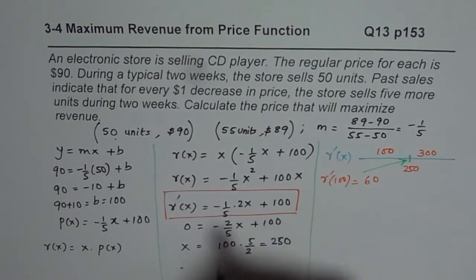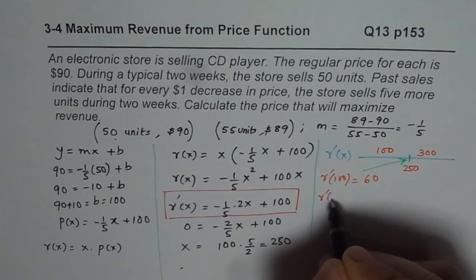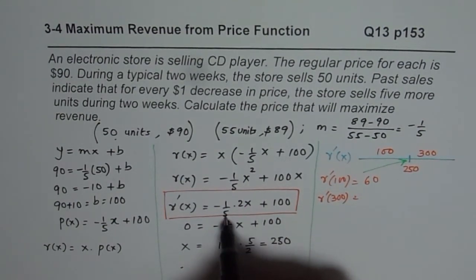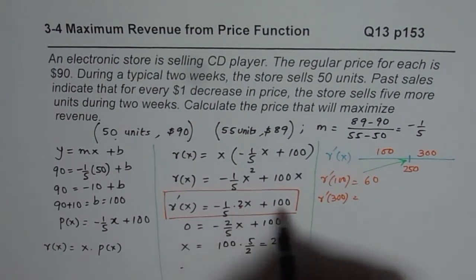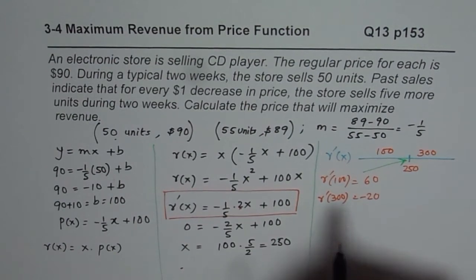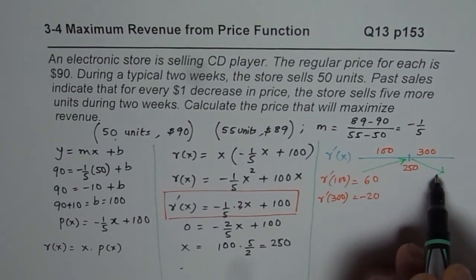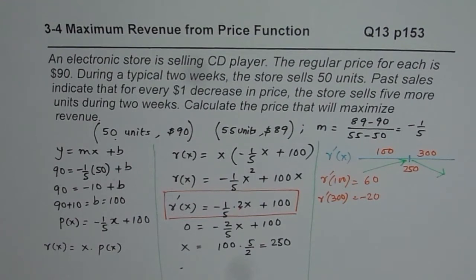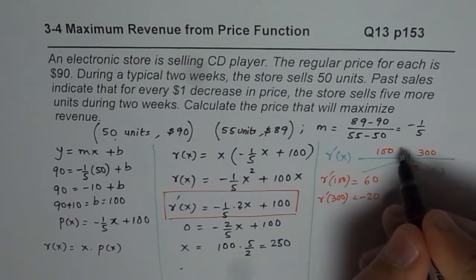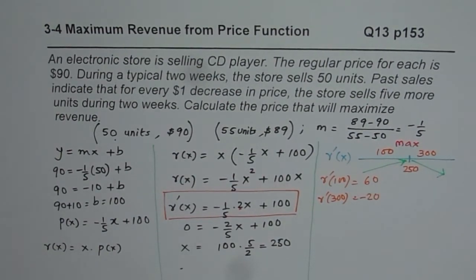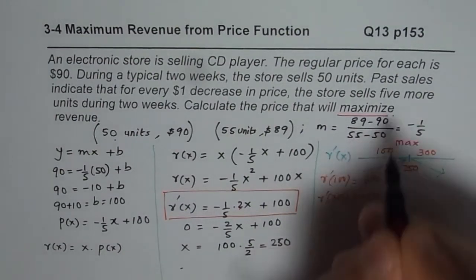If I substitute 300 here, so R dash has 300. So 300 divided by 5 is 60, 60 times 2 is 120, so you get minus 20 in this case. Minus means revenue, rate of change of revenue is decreasing. So from here, you confirm that for the revenue of 250, it is indeed maximum. So it is indeed maximum. So that we have proved. Now let's continue.